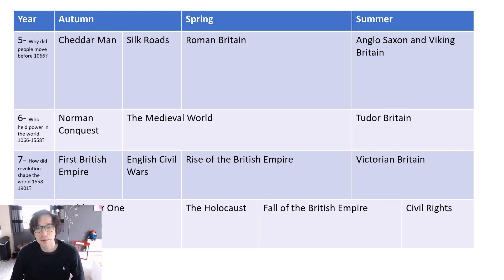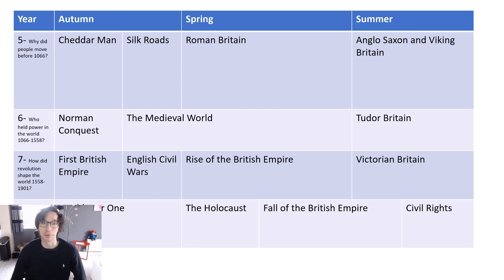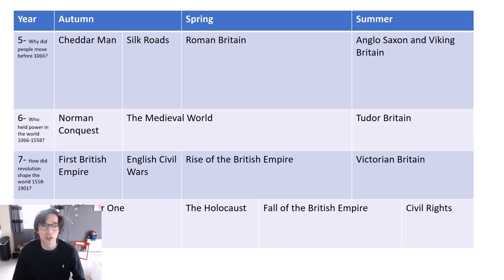Years six, seven, and eight have seen a little bit of change because I've actually moved back some things that were previously year seven units to now be year six units. So those of you who are in year seven and year eight now will notice that the Norman Conquest and the Battle of Hastings in 1066 is now going to be done at the start of year six, because the question we're going to be looking at in year six is: who held power in the world between 1066 and 1558?